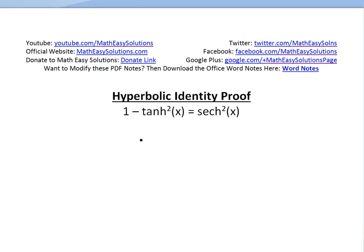Hi, it's everyone from Math Easy Solutions. We're going to discuss another hyperbolic function identity proof. Look at this proof right here: 1 minus hyperbolic tanh squared of x equals hyperbolic secant squared of x. Let's go over this proof.